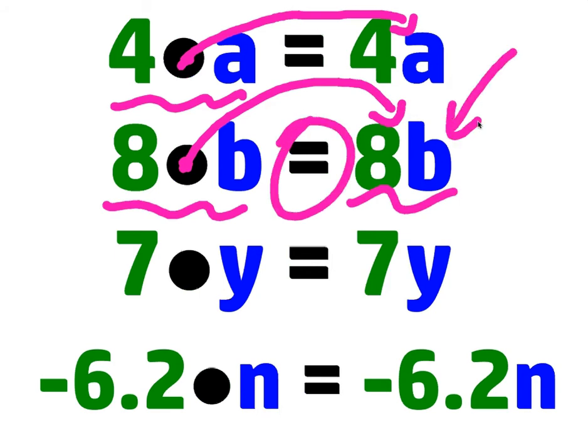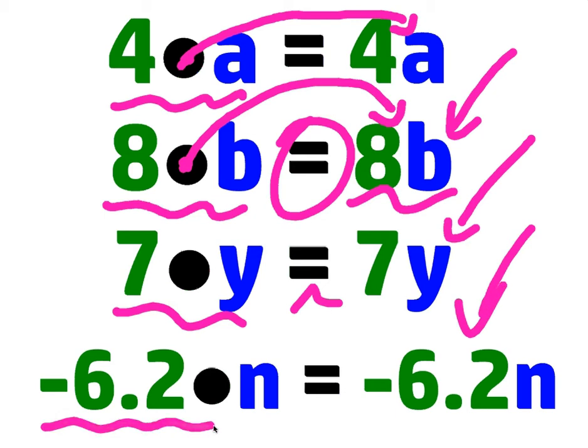AB means A times B. 7Y means 7 times Y. They're the same thing, but it's shorter, and in math we want to get shorter. We want to be simpler. Negative 6.2 times N, we can rewrite as negative 6.2N. Again, each time you notice, the multiplication sign is going away.